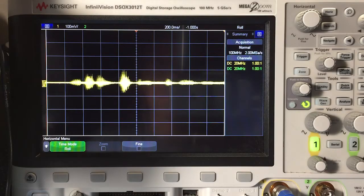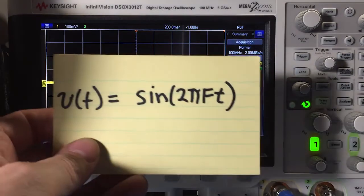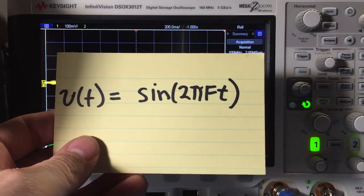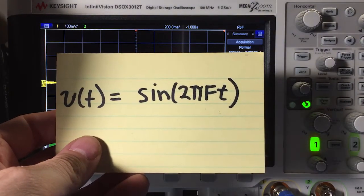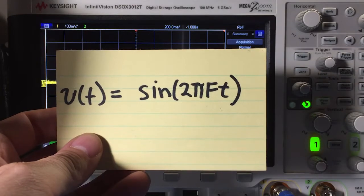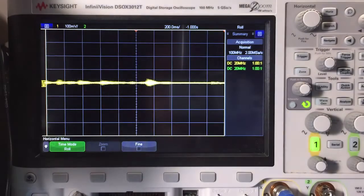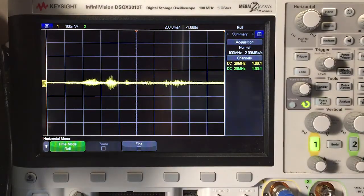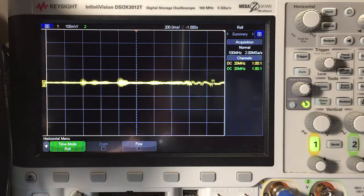Another very popular signal is a sinusoidal signal, where we have our voltage as a function of time and that equals sine times 2 pi times a frequency times the time. And how does that look on the oscilloscope? I could use a function generator, or I could just whistle.